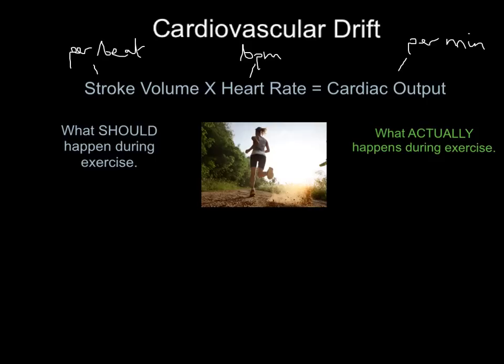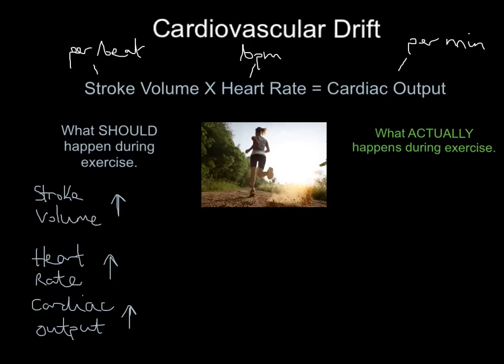What is cardiovascular drift? There's a picture of a lady running. On one side is what should happen during exercise, and on the other is what actually happens — that's what cardiovascular drift refers to. What should happen: stroke volume should increase, heart rate should increase, and cardiac output should increase when you start jogging. That's largely what does happen the vast majority of the time.